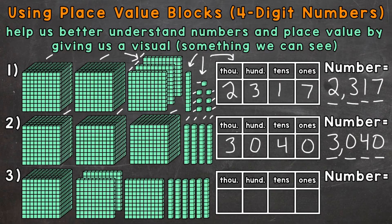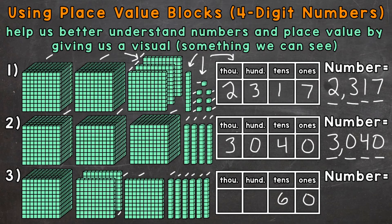Lastly, number three. We'll start with the ones — we don't have any here, so we represent that with a zero. Then we go to the tens place: one, two, three, four, five, and six groups of 10, which is 60 or has a value of 60. So we will put a six in the tens place. Then we have one, two, and three groups of 100, which has a value of 300 — so a three in the hundreds place.